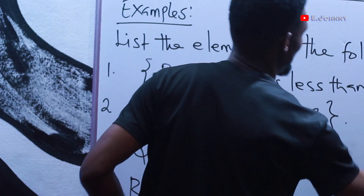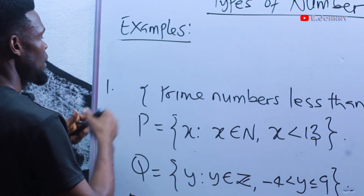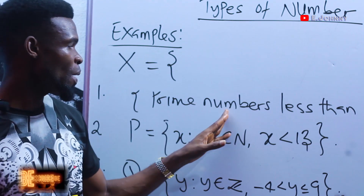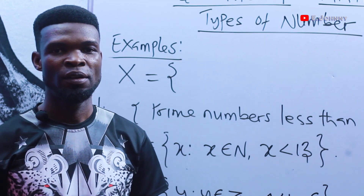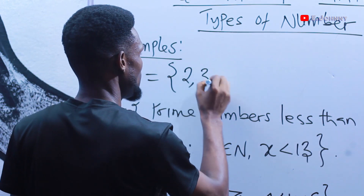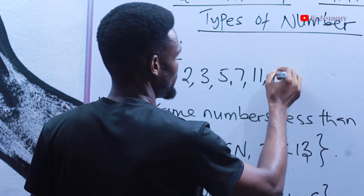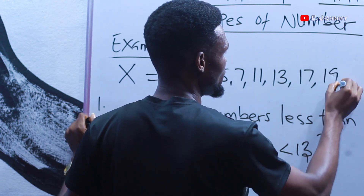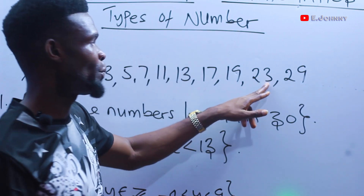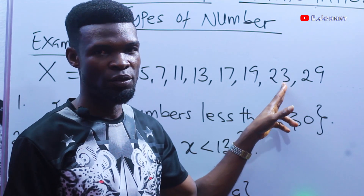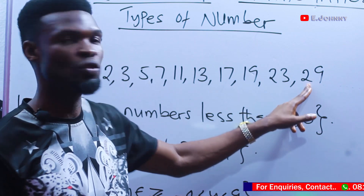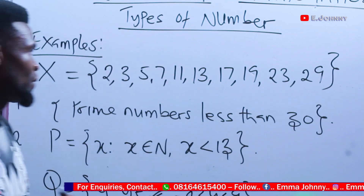Starting with the first one: set X equals the set of prime numbers less than 30. Prime numbers are numbers that have only two factors — one and itself — and the first prime number is always 2. So listing prime numbers less than 30: 2, 3, 5, 7, 11, 13, 17, 19, 23, 29. Numbers like 24, 25, 26, 27 are not prime. 29 is less than 30 so we stop there.